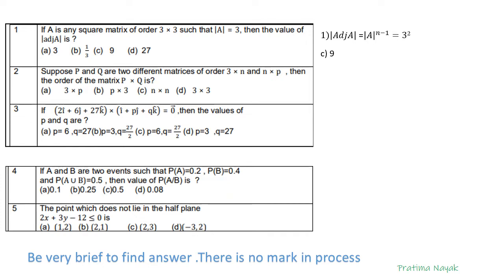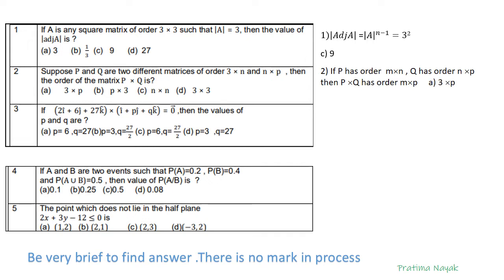Number 2: Suppose P and Q are different matrices of order 3×n and n×P. Then the order of the matrix P multiplied by Q has options 3×P, P×3, M×n, and 3×3. You should know that if P has order m×n and Q has order n×P, then P multiplied by Q has order m×P. So the answer is A, which is 3×P.